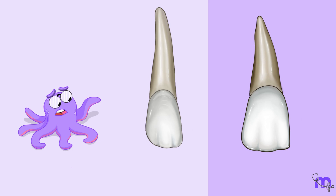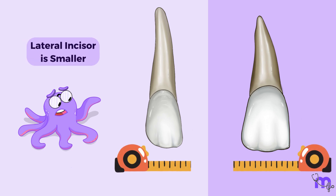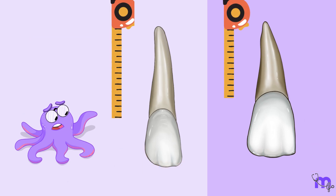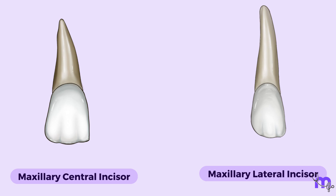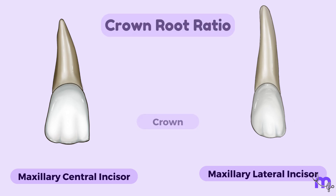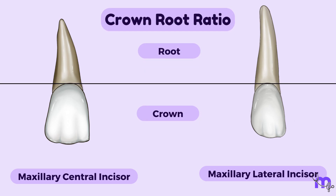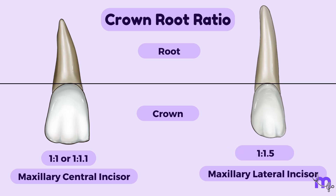In terms of size, the lateral incisor is generally smaller in all dimensions, except when considering root length. The key feature to differentiate the two is the proportion of the crown to root length. The central incisor has nearly a 1 to 1 or 1 to 1.1 crown-root ratio, whereas the lateral incisor has a 1 to 1.5 crown-to-root ratio.